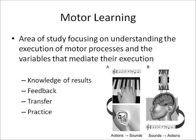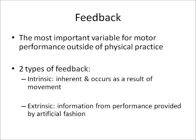Today, in the activity part of this lab, we're focusing on feedback, which you'll see in the video. Feedback is the most important variable for motor performance outside of physical practice. There are two types: intrinsic, which is inherent and occurs as a result of movement, and extrinsic, which is information from performance provided in an artificial fashion. In the data video, you'll see extrinsic feedback being given, and the subject will also have some intrinsic feedback from his previous throws.